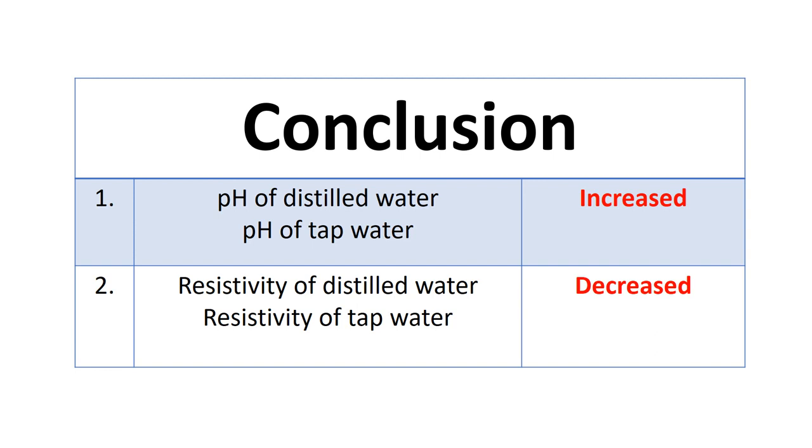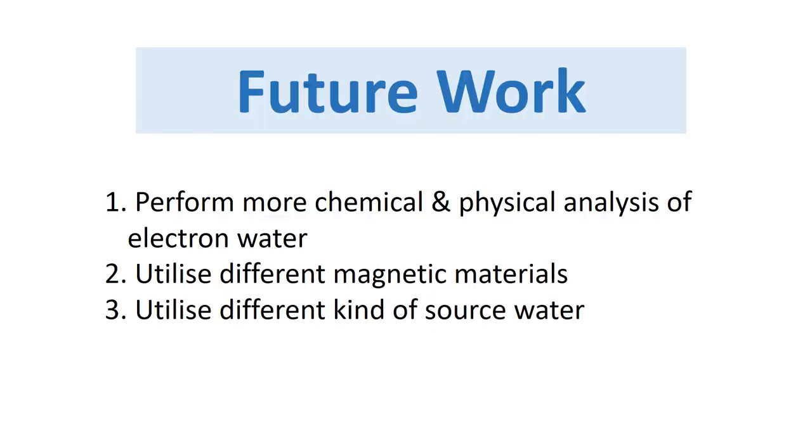This shows electrons were generated in the water and captured in the water as the hydrogen electron pairs. What is the future work I can do about this is that I can perform more chemical and physical analysis of the electron water. As a result of the hydrogen electron pairs being formed, perhaps there may be some chemical changes or some physical changes of the water. I need to perform more experiments.